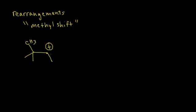If someone tells you that carbon has a positive charge and it appears to only have two bonds, remember there's another hydrogen bonded to that carbon. So that carbon is bonded to three other atoms and is sp2 hybridized with a positive charge. The carbon bearing the positive charge is directly bonded to two other carbons, so this is a secondary carbocation. This carbocation can actually undergo a rearrangement to form a more stable carbocation — a methyl shift.